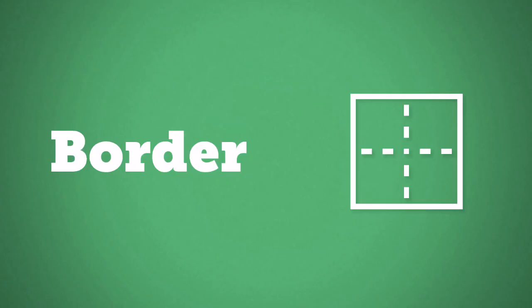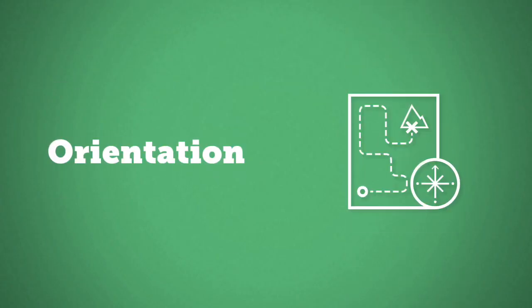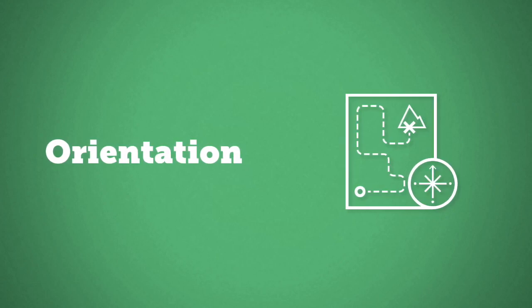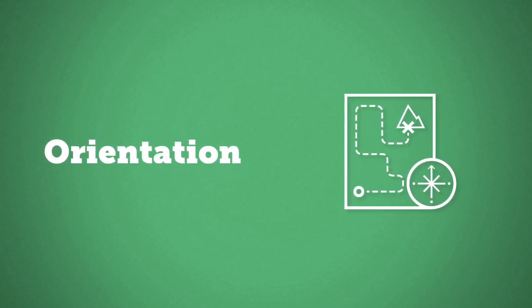So every map should have a border which covers every feature listed here. The map should also have an orientation. This will often look like a compass point or very simply an arrow with an N for north.